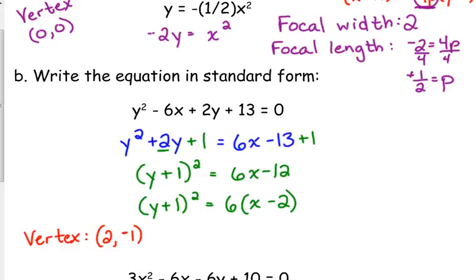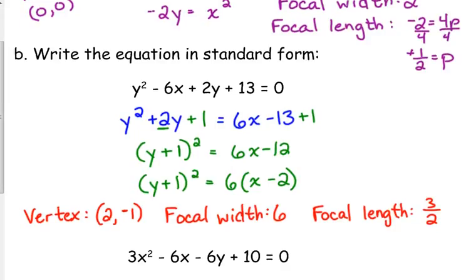The x comes first. Positive 2, negative 1 is the vertex. Our focal width is 6 because that's the number in front. The focal length, we divide it by 4. And 6 over 4 reduces to 3 over 2. So from the standard form, you can tell all those characteristics.